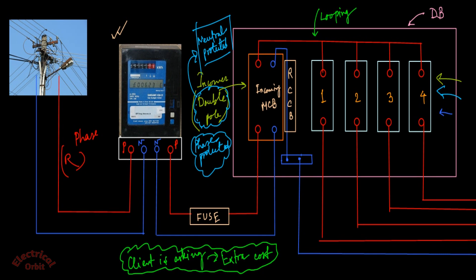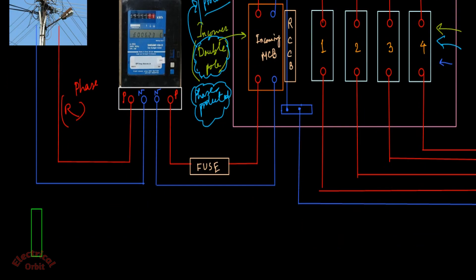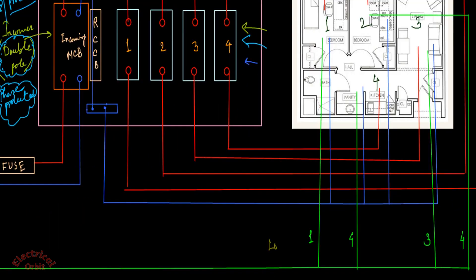Now another important thing is connecting the earthing with the earthing bar and bringing it to the individual rooms. Suppose this is your earth part, and you have taken a connection from this earthing bar to the individual rooms in the same way by following the looping of these earth connections. So we are bringing all this phase, neutral, and earth to our room to power our loads.